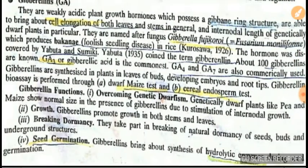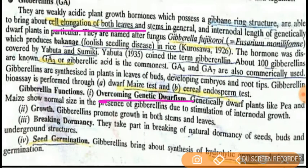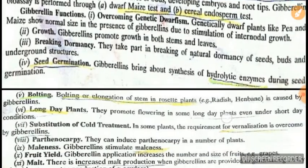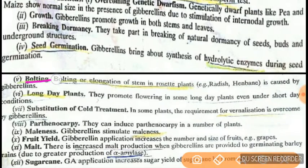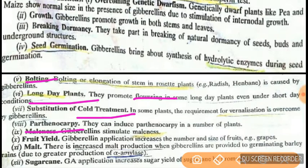For gibberellins: the main question is cell elongation and overcoming genetic dwarfism. Breaking dormancy is very important. Seed germination is important. Bakanae disease is caused by Fusarium moniliforme. Bolting is very important — it promotes bolting in long-day plants, promotes flowering, substitutes cold treatment, and induces parthenocarpy. In the next video we will continue with other hormones. Please like, share, and subscribe. Thank you.